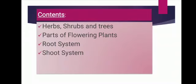In this chapter, we will learn about herbs, shrubs and trees, i.e. different types of plants, parts of flowering plants, root system meaning function of roots and their modification, and shoot system that includes stem, leaf, flowers, seeds, fruits and their functions.